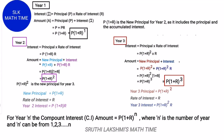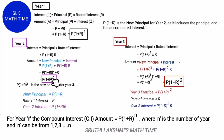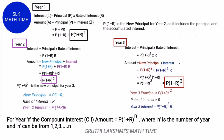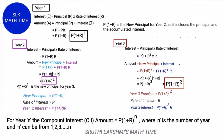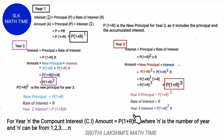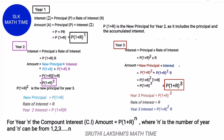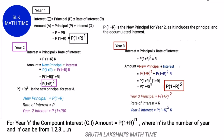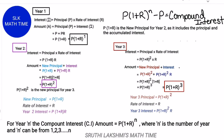So the compound interest amount formula for year 1 is P into 1 plus R the whole power 1, for year 2 it is P into 1 plus R the whole power 2, and for year 3 it is P into 1 plus R the whole power 3. If N can be 1, 2, 3, 4 and so on, then for the Nth year the formula is P into 1 plus R the whole power N. Since amount equals principal plus interest, the compound interest formula is the amount formula minus P — that is, P into 1 plus R the whole power N minus P.